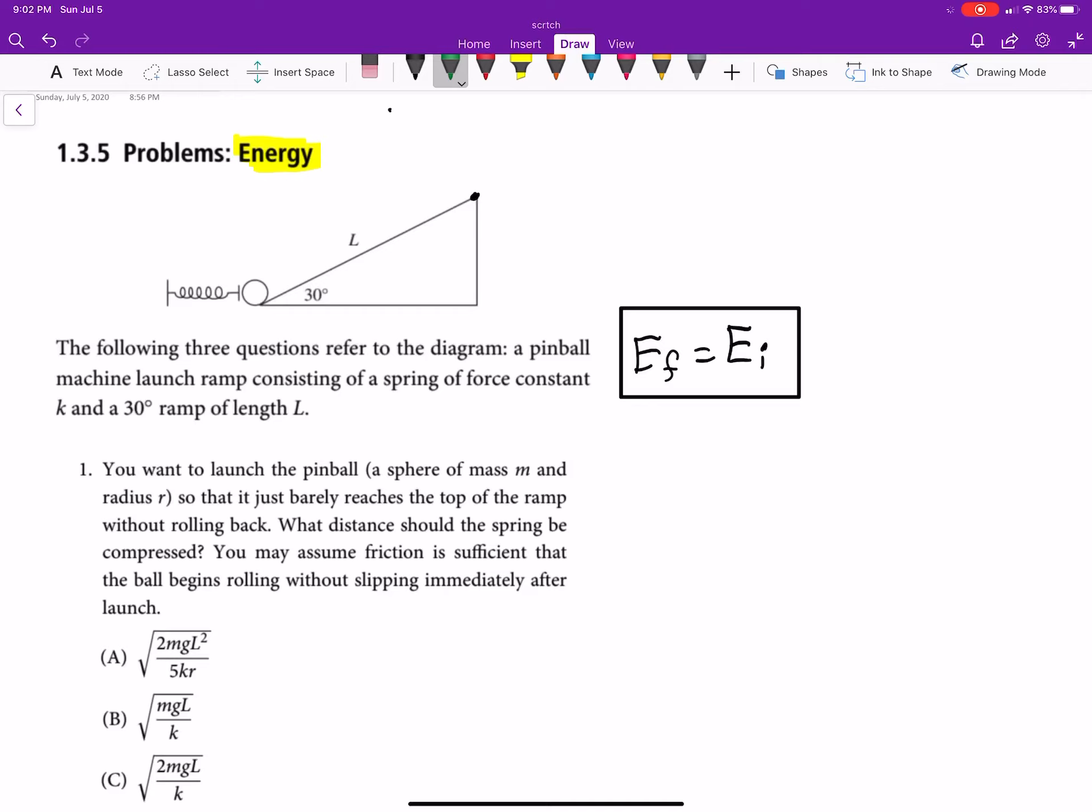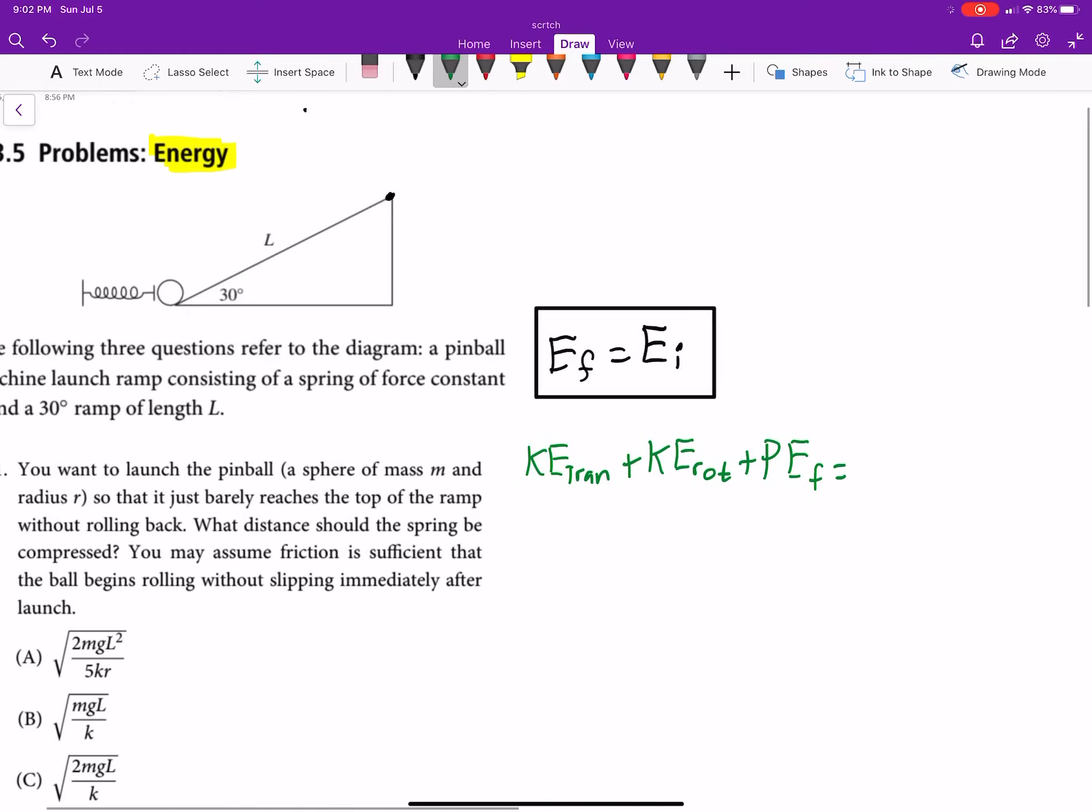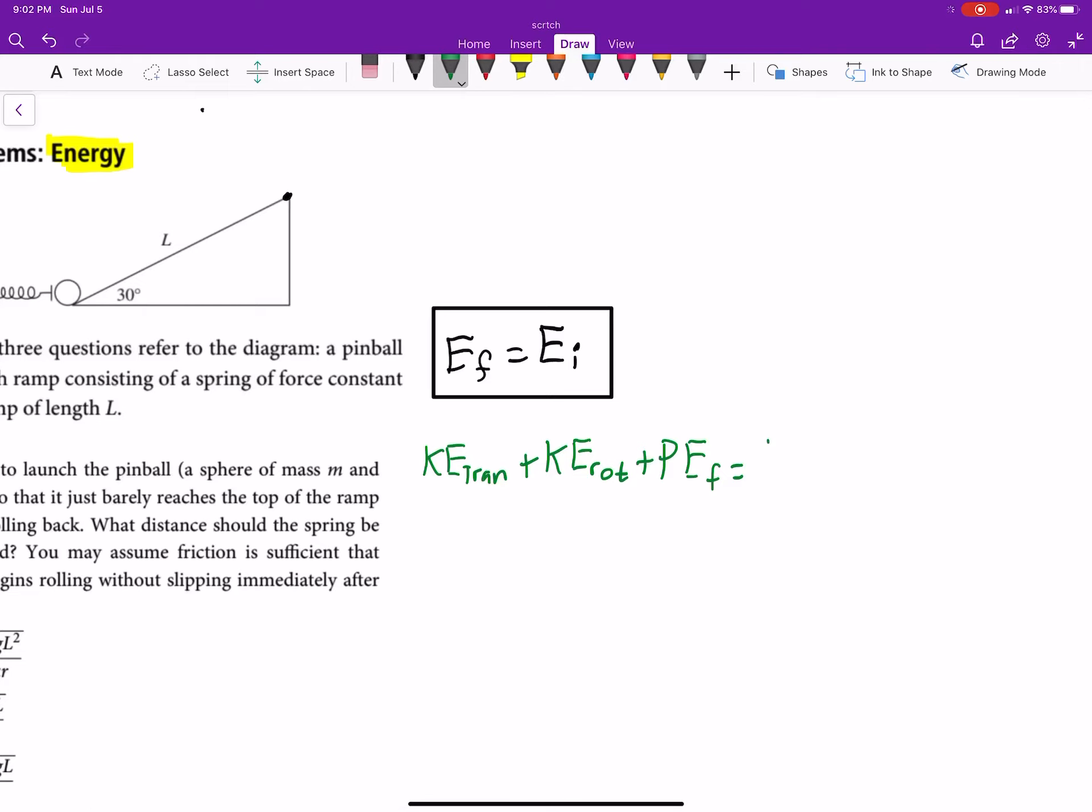Let's go ahead and write this out. So, we have energy final. We'll have kinetic energy translational, plus kinetic energy rotational, plus potential energy final, equals potential energy initial, plus kinetic energy translational, plus kinetic energy rotational.